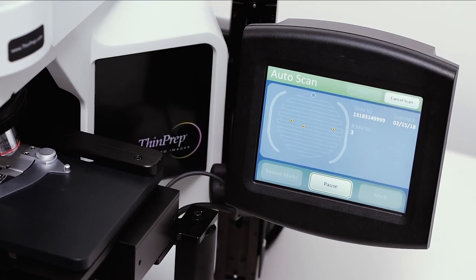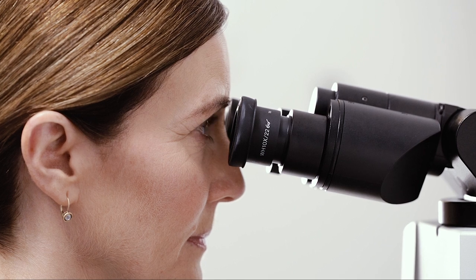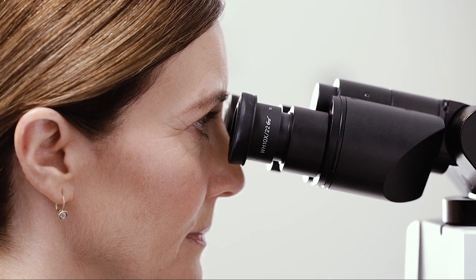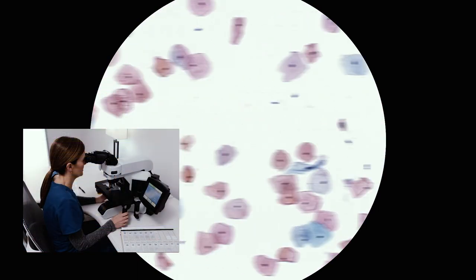A complete full slide review is required if the CT detects any suspicious cells within the 22 fields of view. The ThinPrep Integrated Imager guides the CT during the full slide review. The imager tracks the progress to ensure that all cells are accurately presented to the CT.